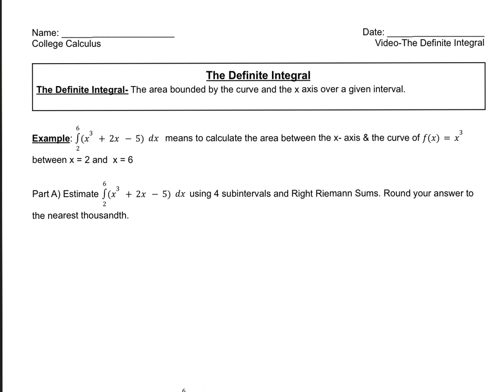So for example, if I have this function, x to the third plus 2x minus 5 dx, with the integral between 2 and 6, that means I want to calculate the area between the x-axis and the curve of f of x equals, this should say more than just x to the third, so it should say x to the third plus 2x minus 5. So between x equals 2 and x equals 6.